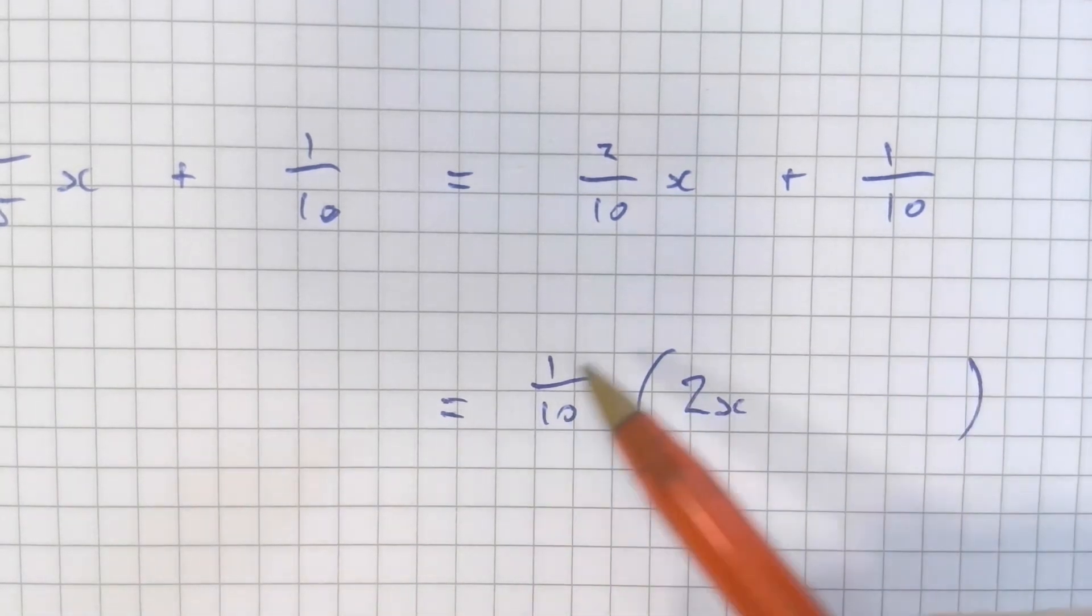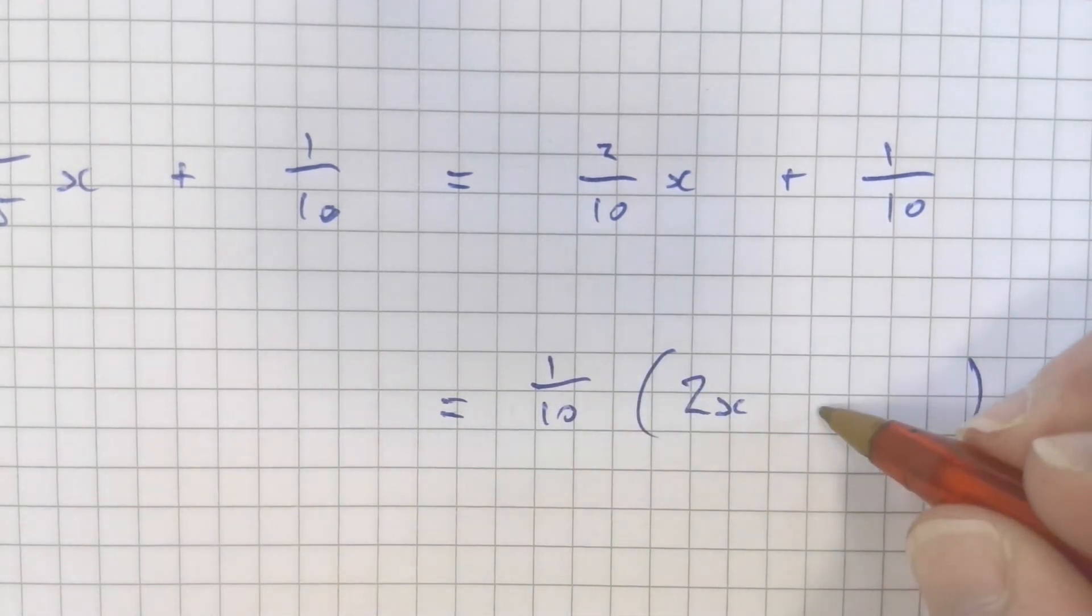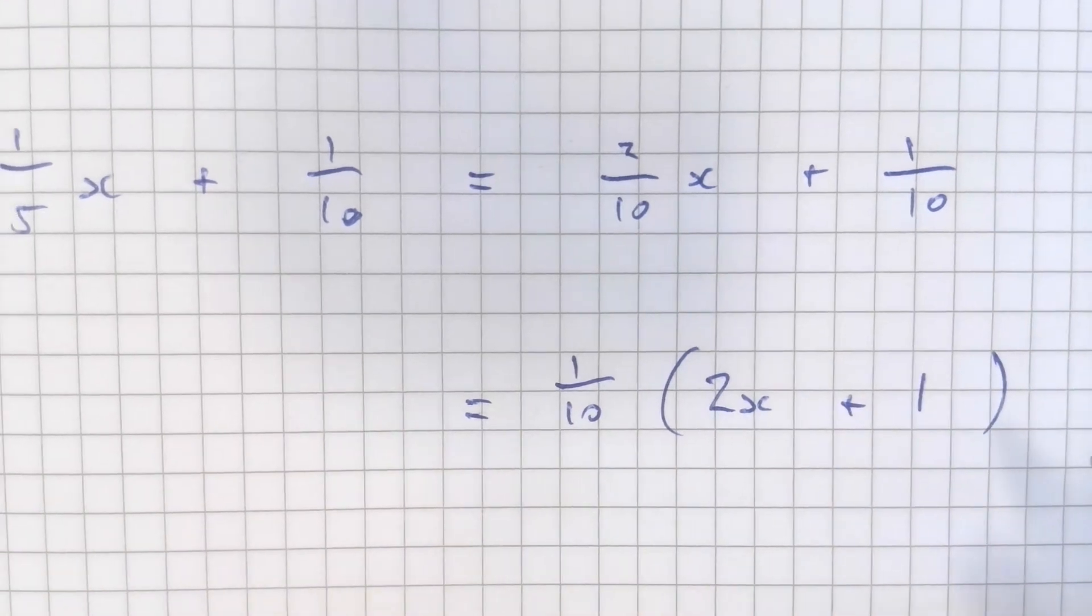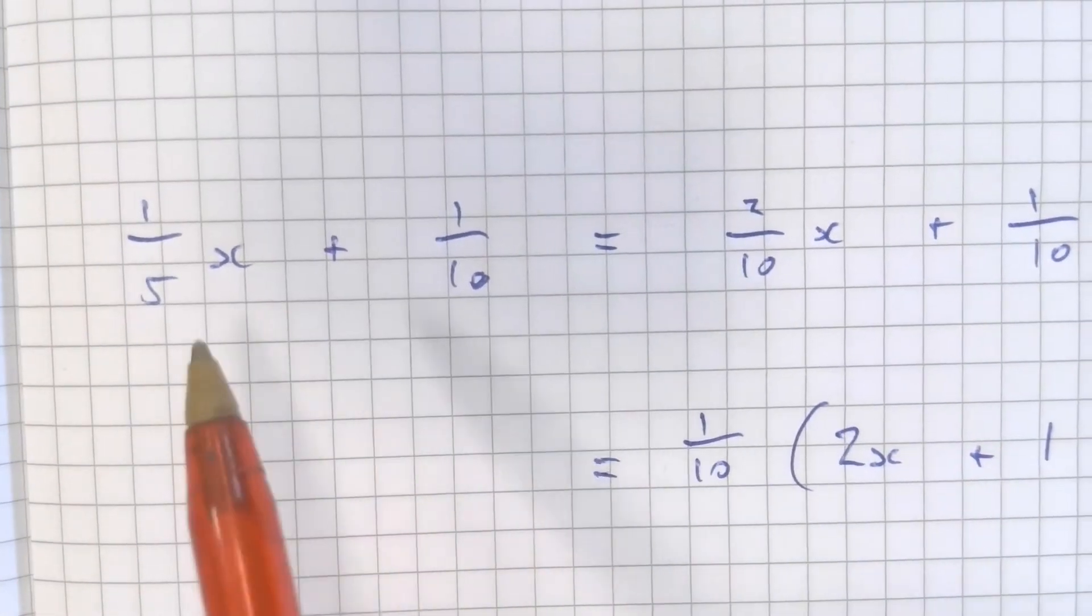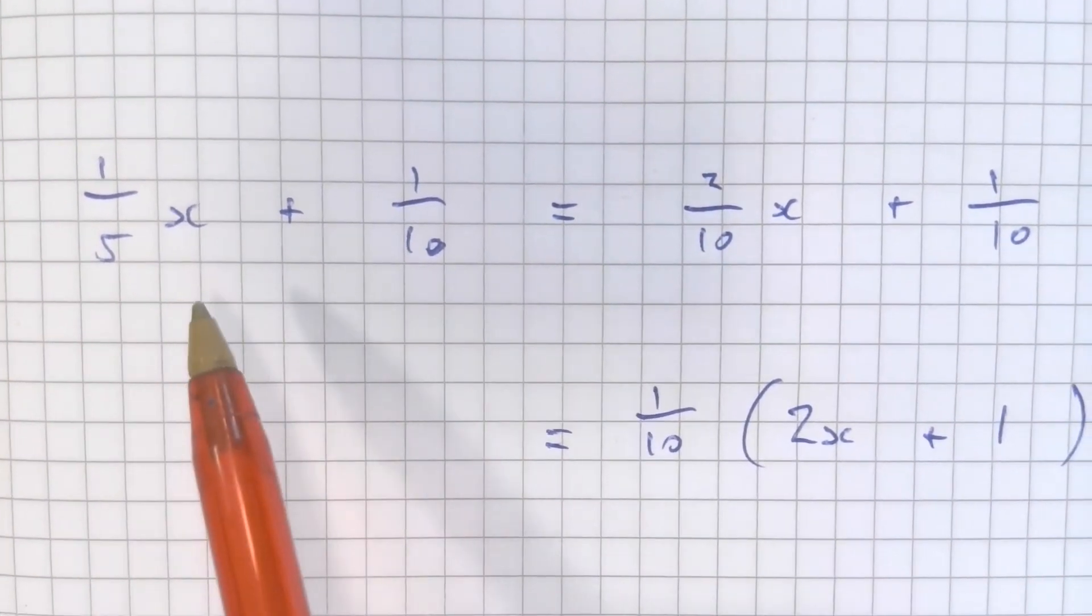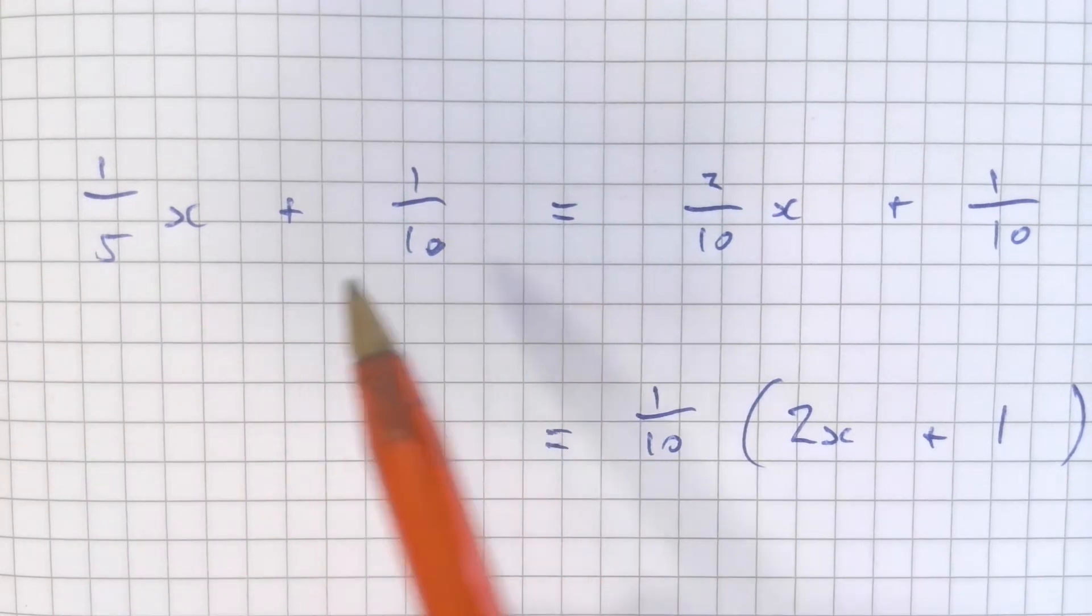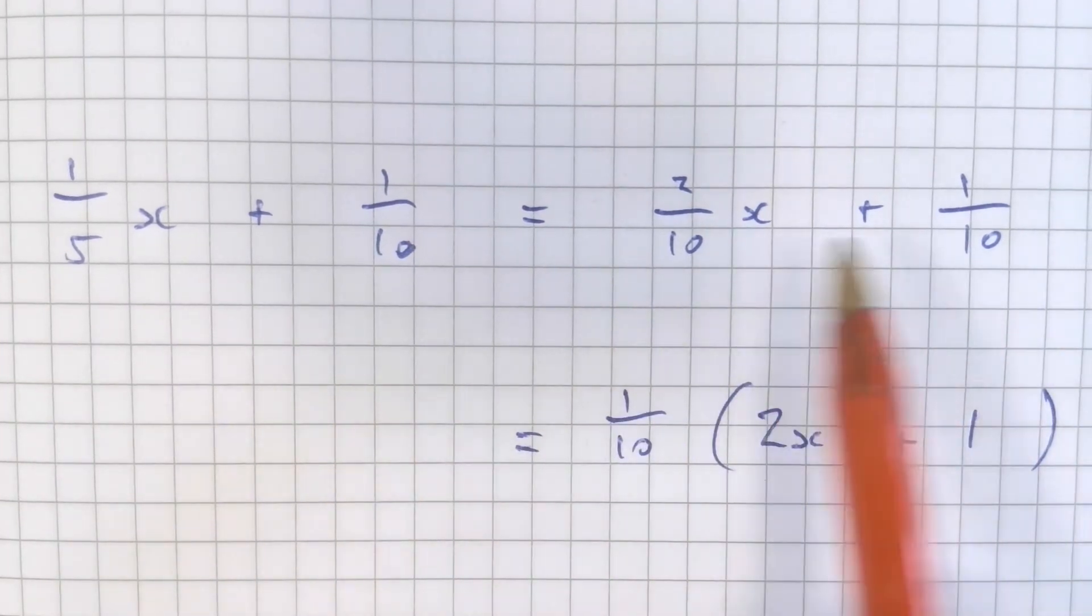And then what do I times one tenth by to make one tenth? Well, that's just one. So we deal with uncommon denominators by making the denominators common. In this case, making them both into tenths.